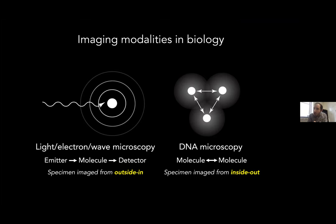By analogy: if light microscopy were a satellite orbiting the earth and imaging the location of every person on the surface, DNA microscopy performs the exact same task instead using the Bluetooth signals on their mobile phones. In this way, DNA microscopy is like Bluetooth but for DNA molecules.